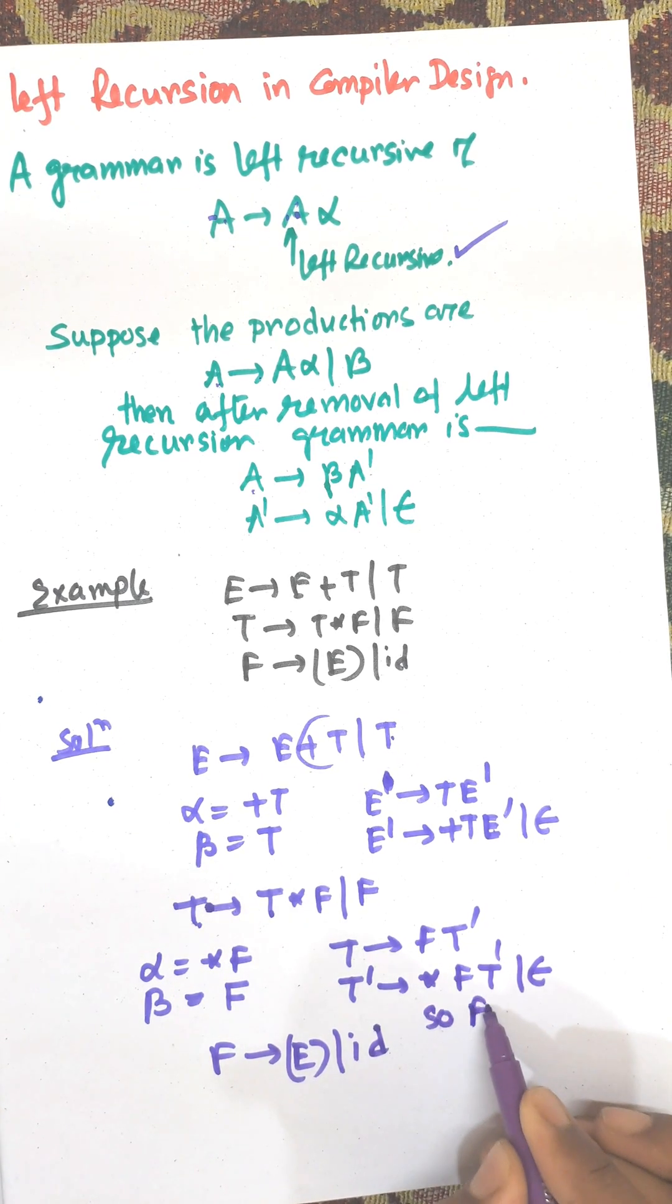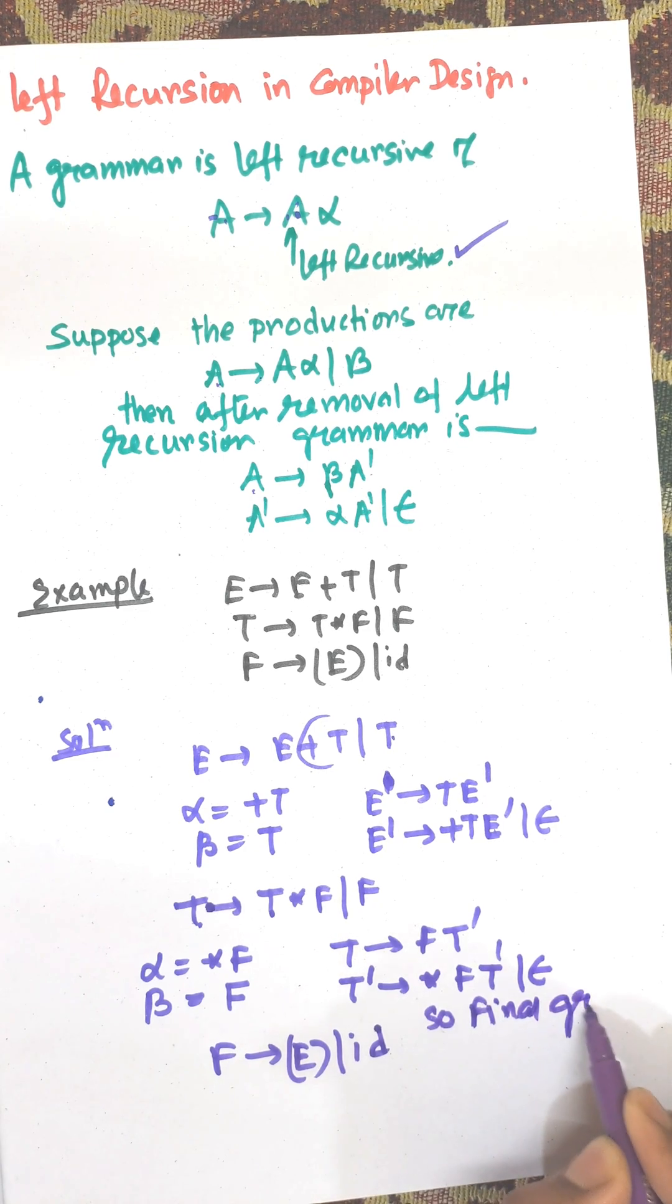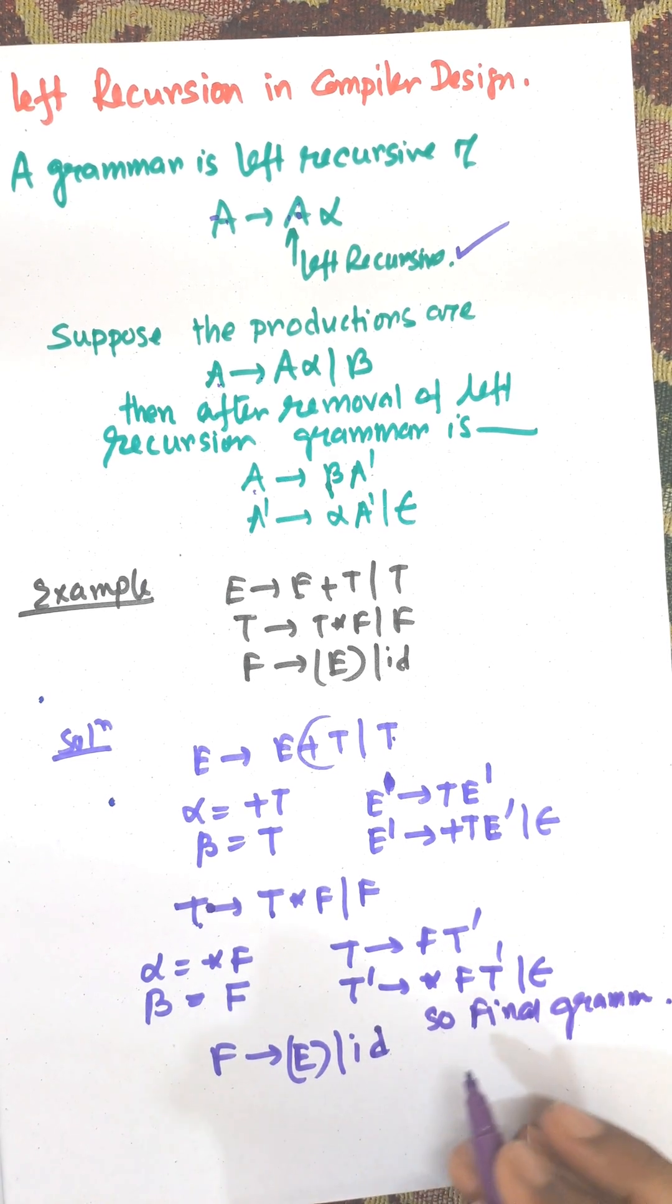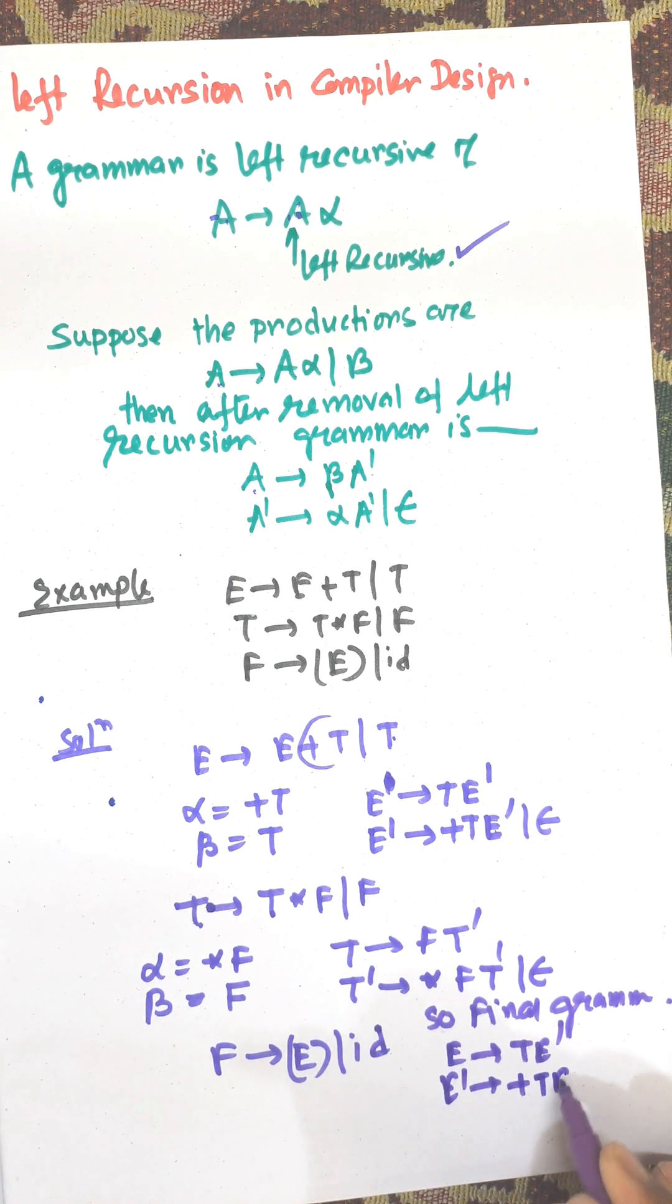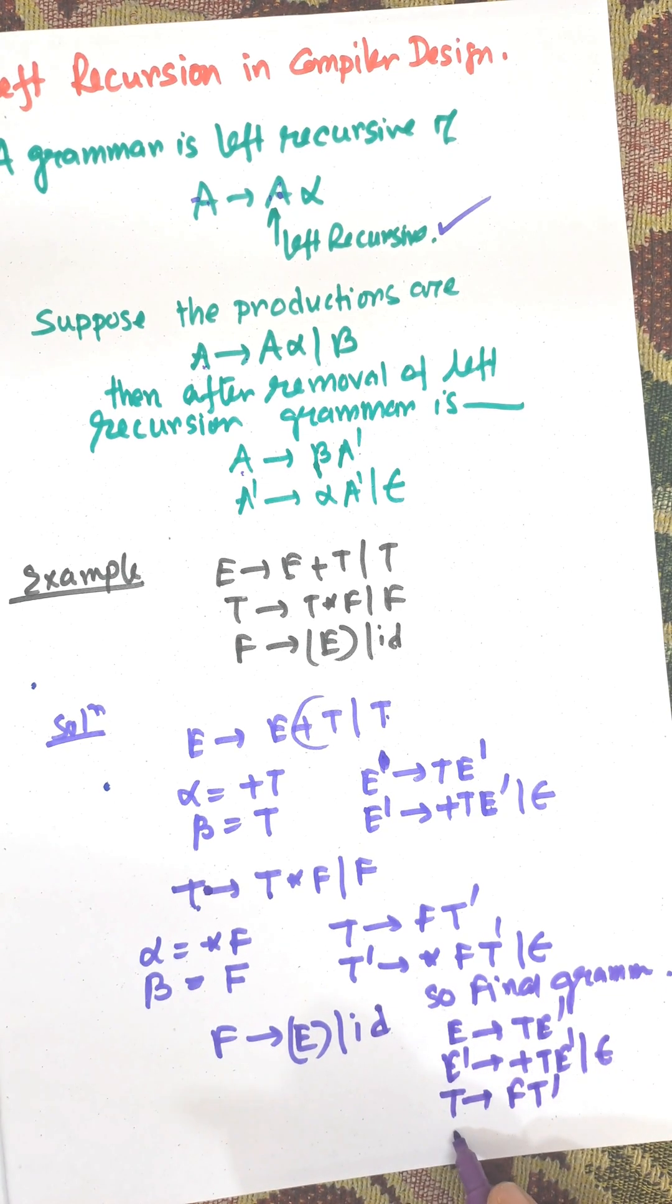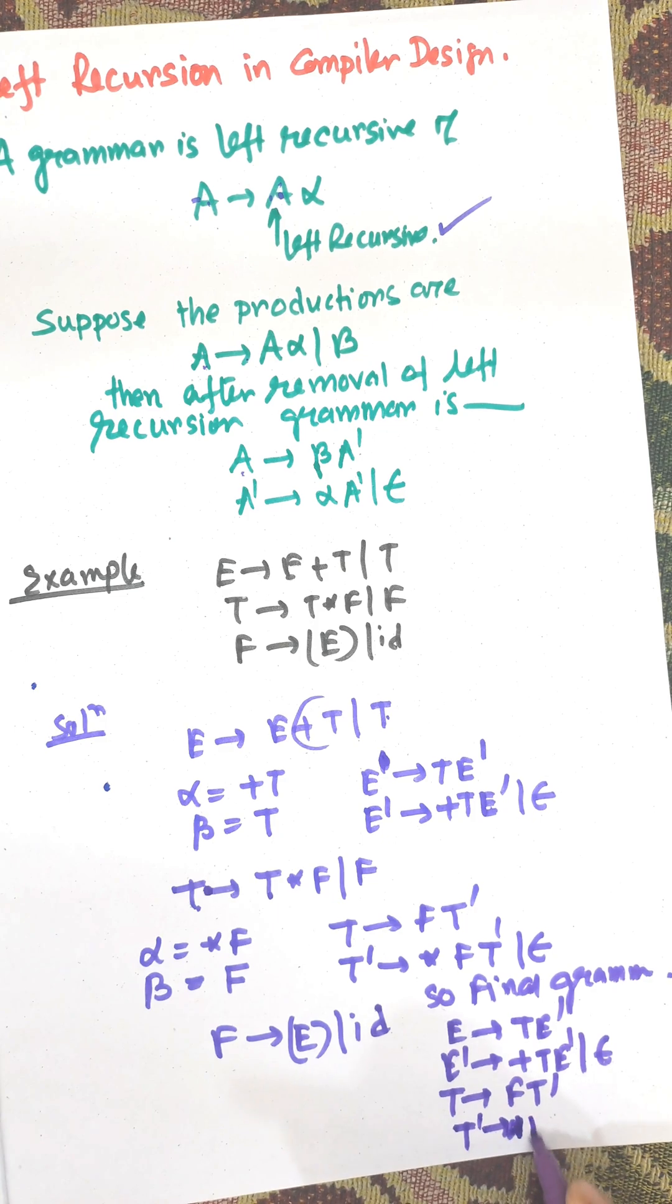So, the final grammar is: E → TE', E' → +TE' | ε, T → FT'.